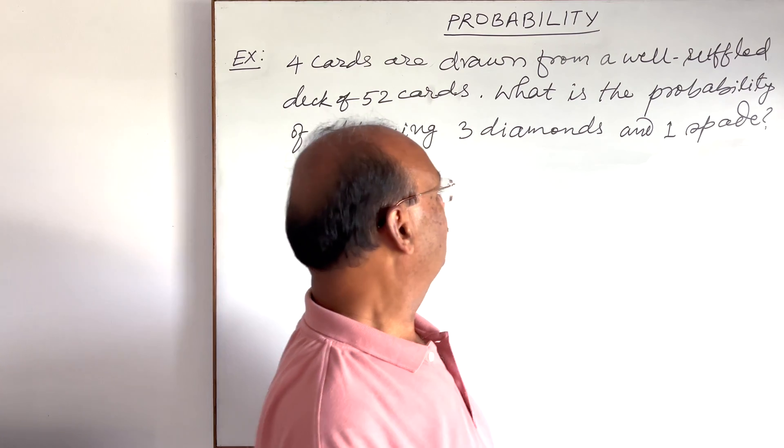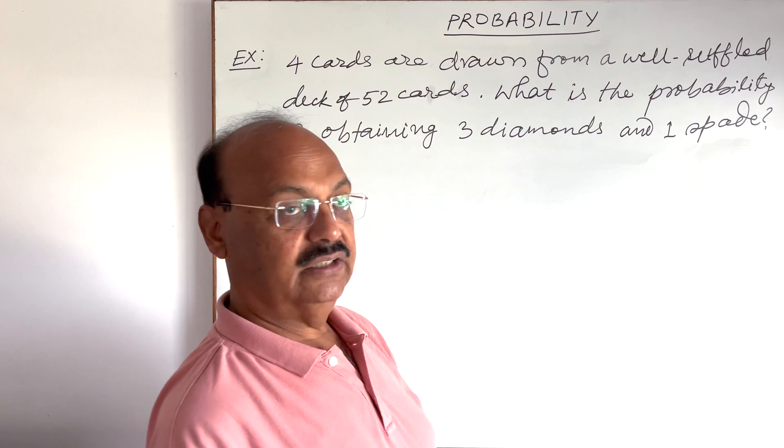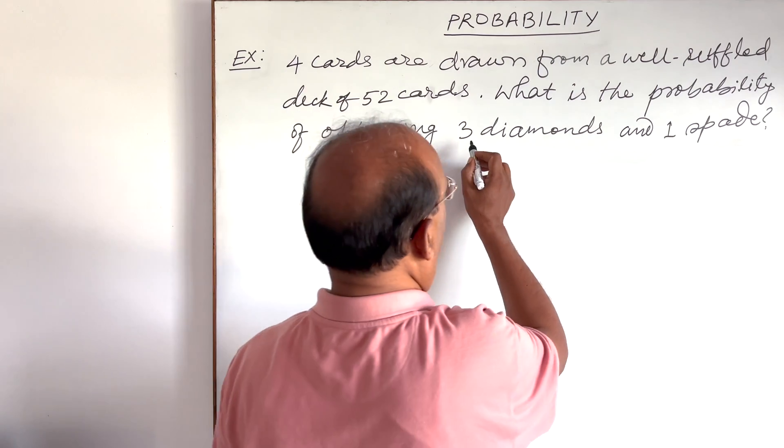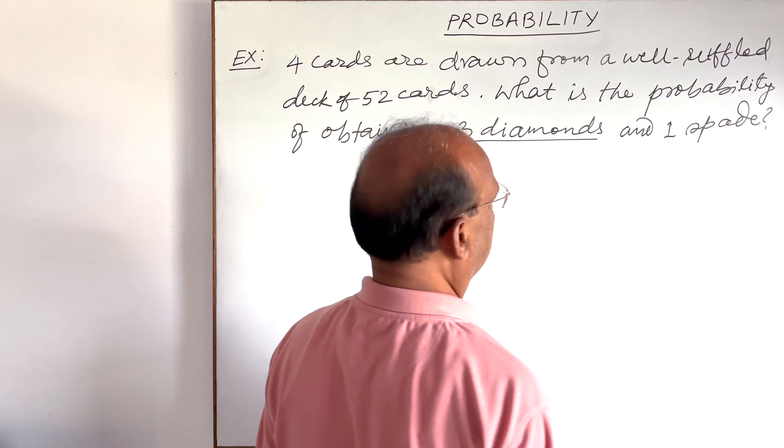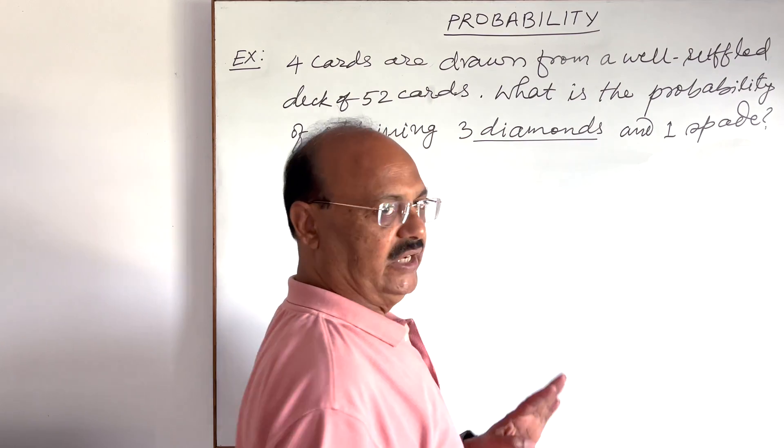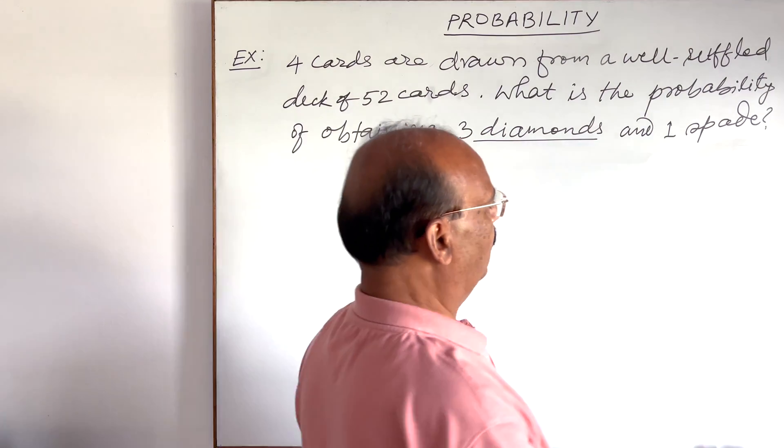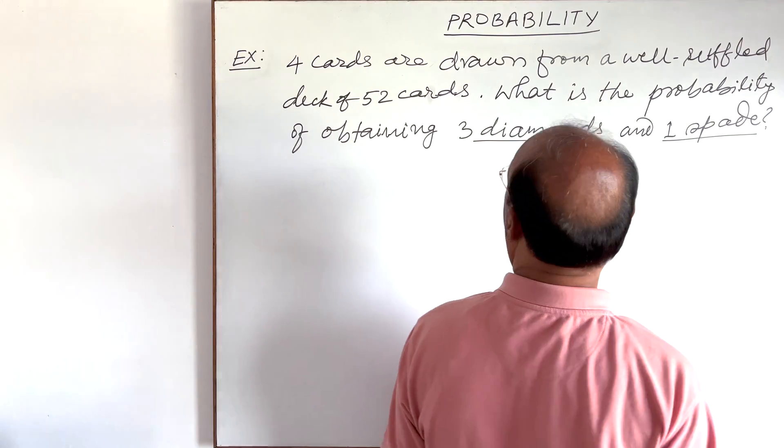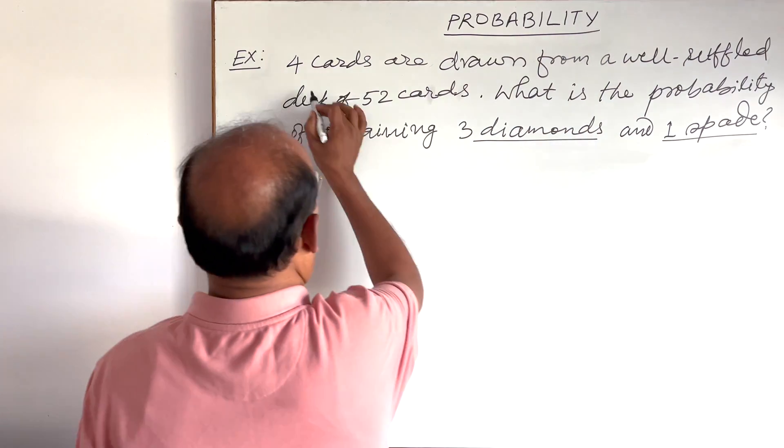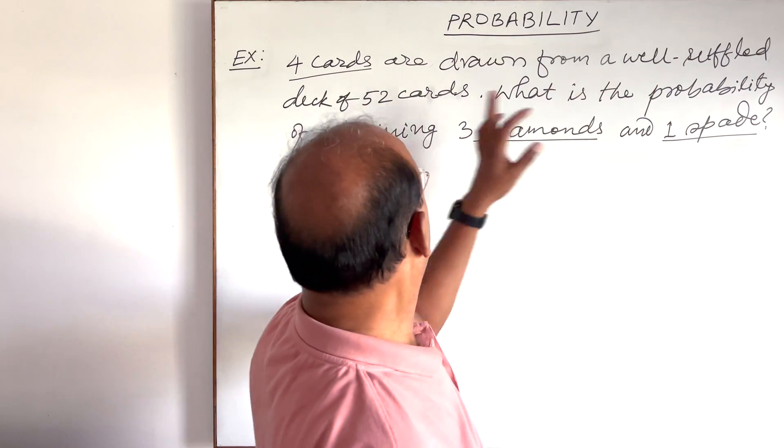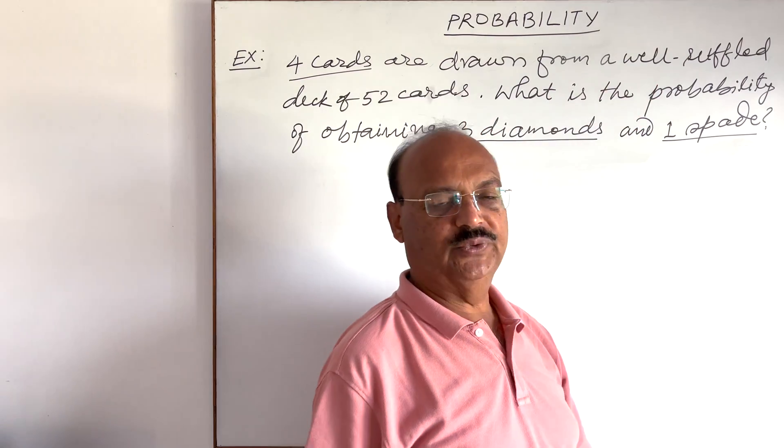So we need to know the probability that three cards are diamond and one card is spade out of four cards which have been drawn from a well-shuffled deck of 52 cards.